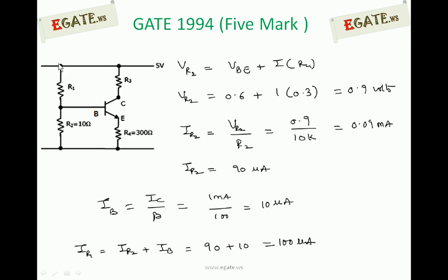The current flowing through this R1 is dividing into base and into R2. If you add current flowing through this R2 and current flowing through the base, that is nothing but total current which is flowing in R1. That is 100 microamps.